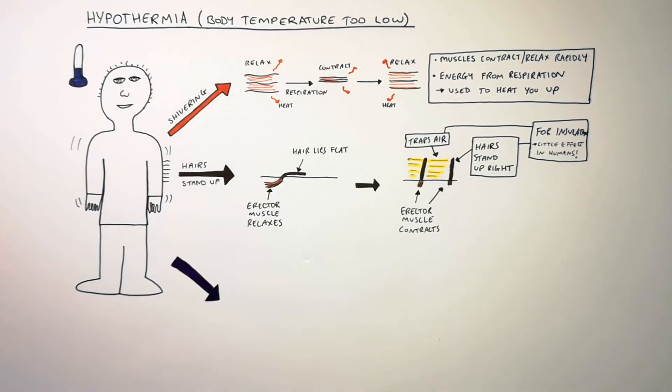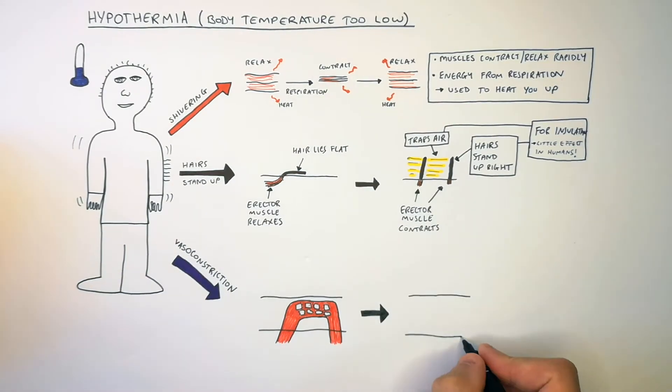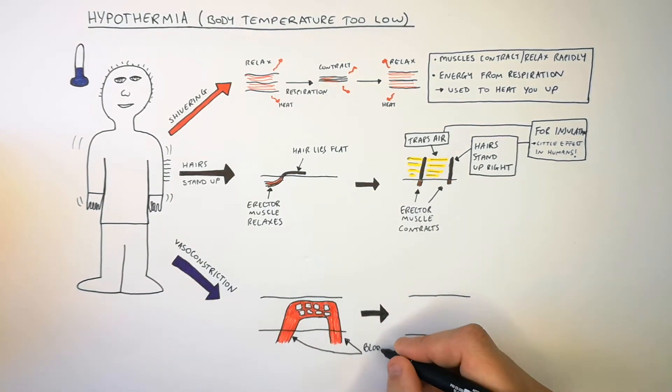When our body temperature is too low our body undergoes a process called vasoconstriction. Directly beneath our skin we've got a blood supply. So during vasoconstriction blood vessels will constrict. They'll get narrower.